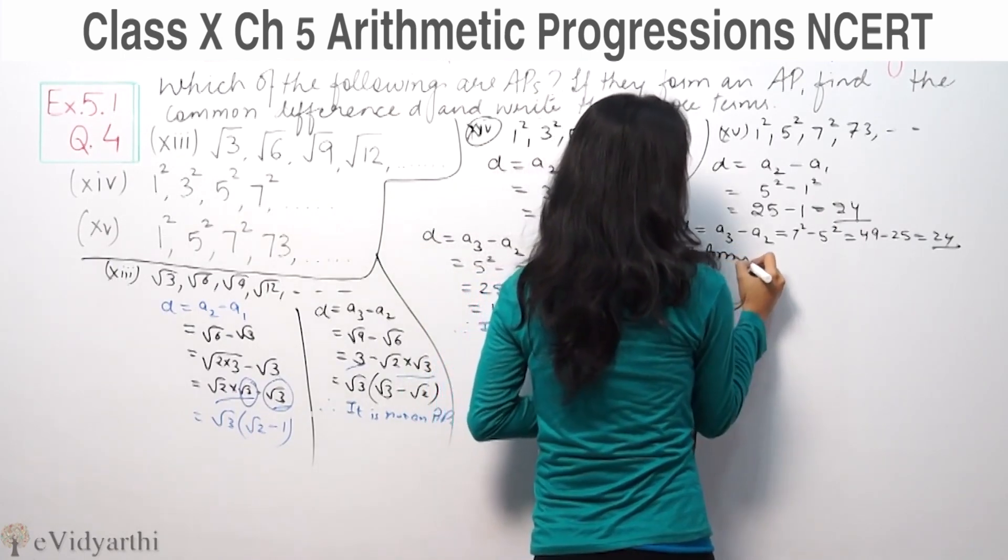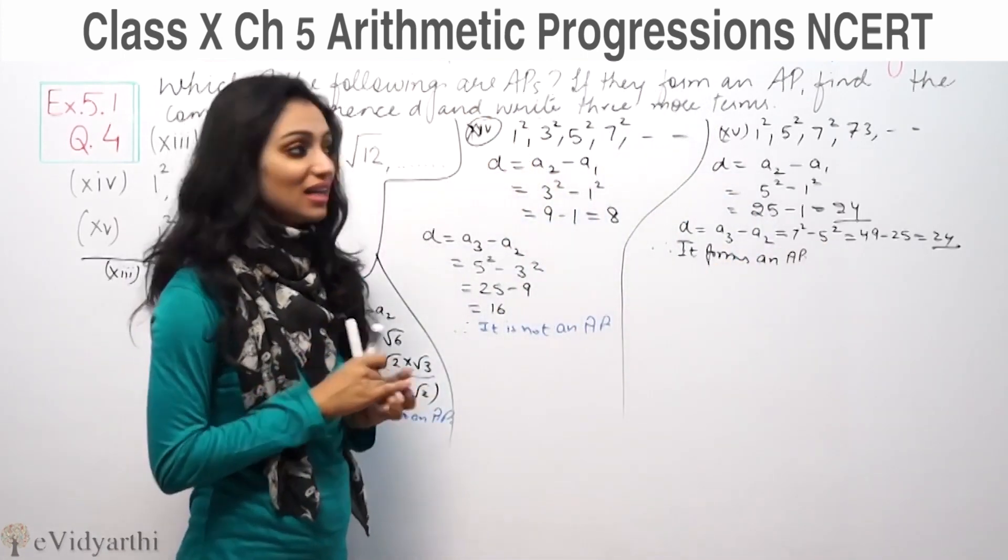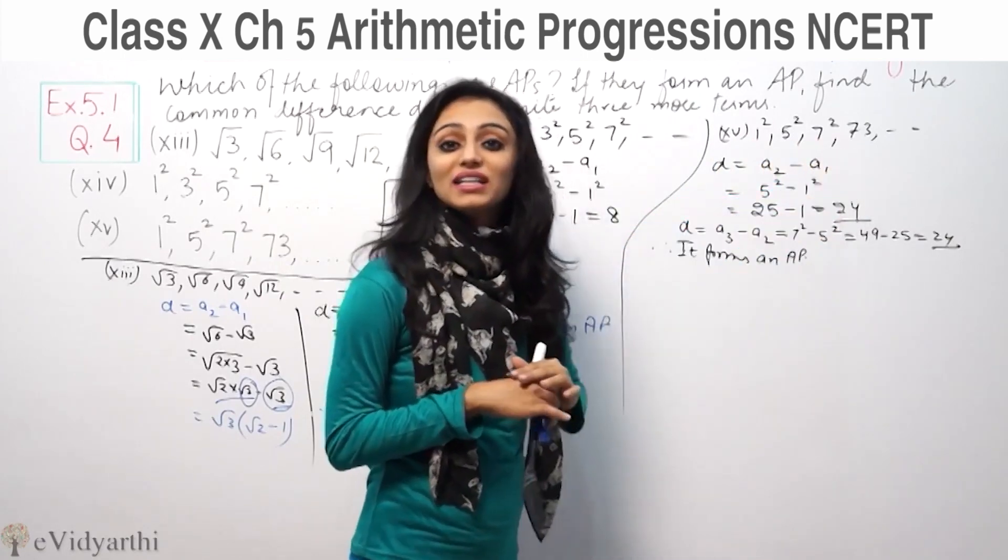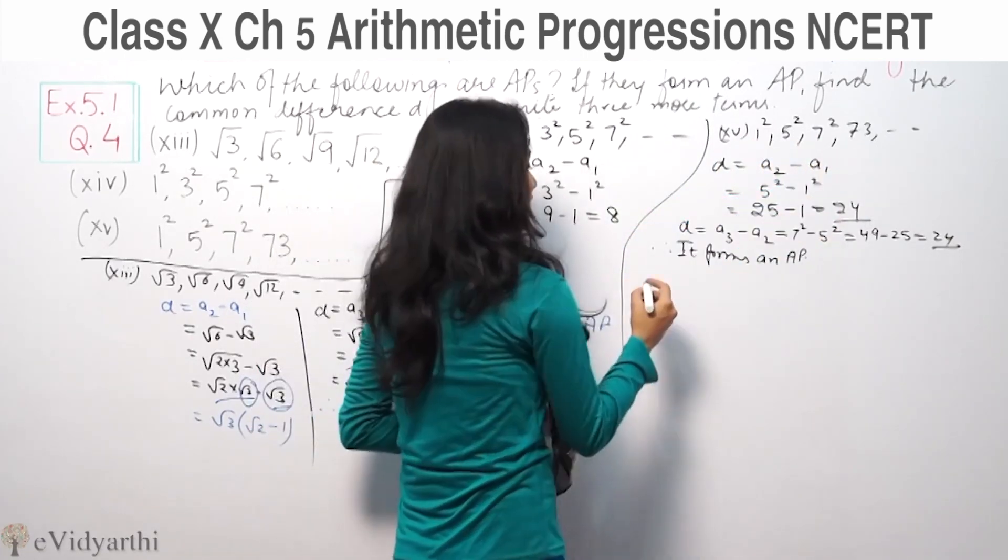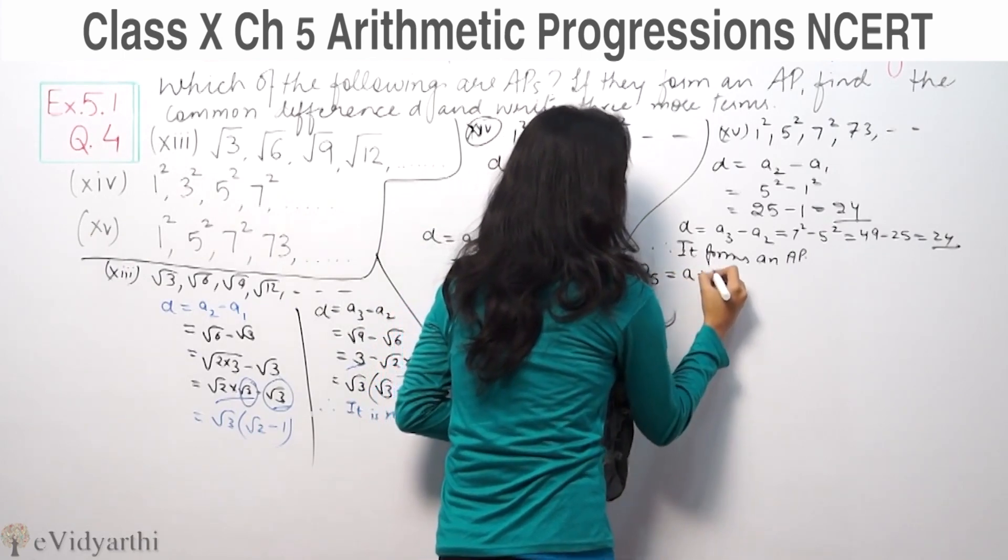So if it forms an AP, we need to find the next 3 terms. This is the first term, second term, third term, fourth term. We need to find fifth, sixth, and seventh terms. For fifth term, A5 equals A plus 4D.